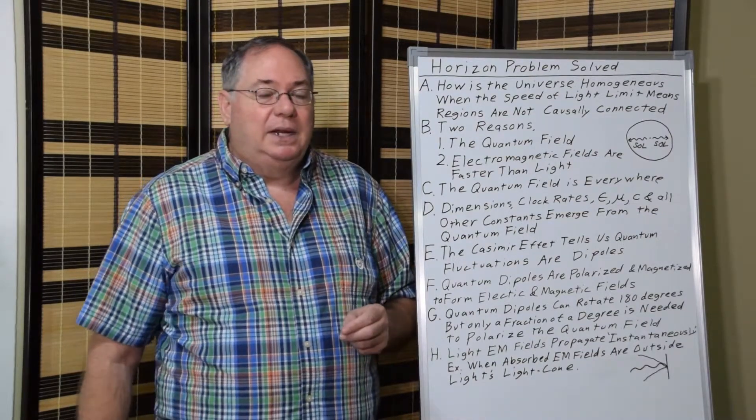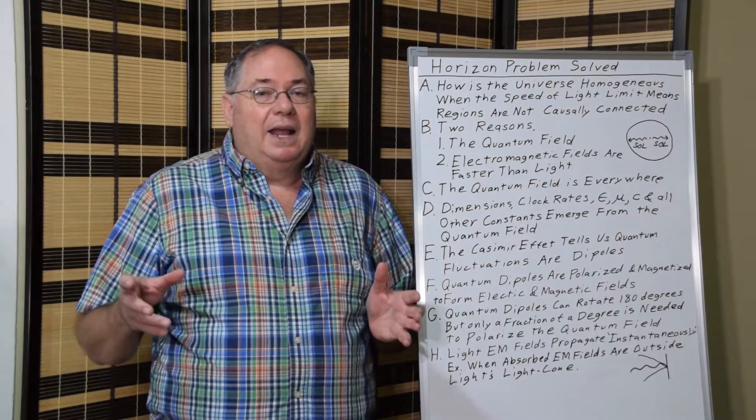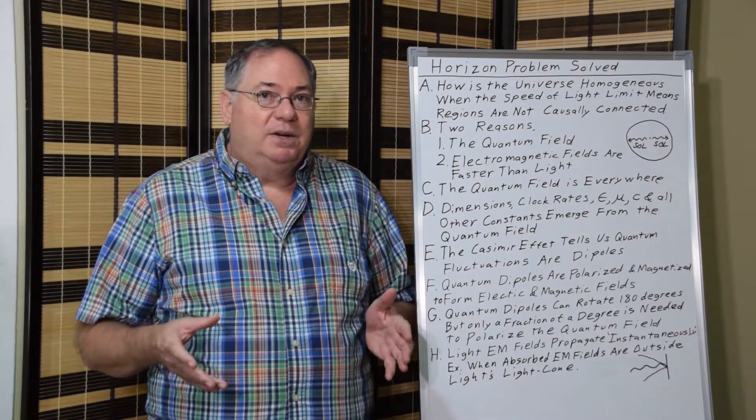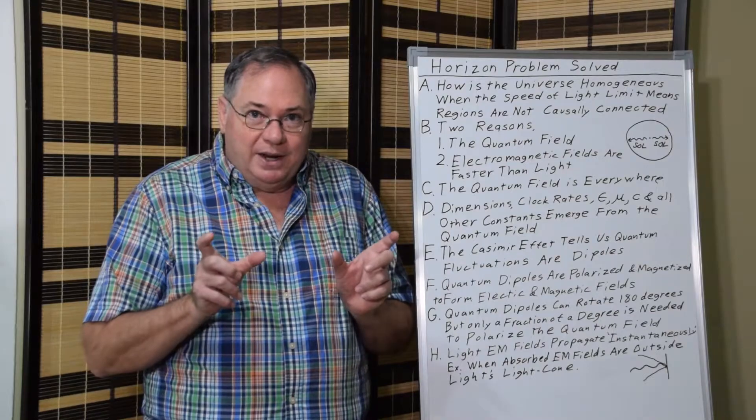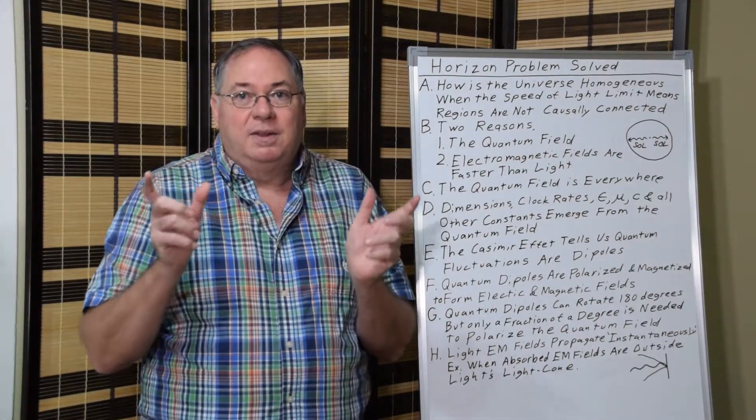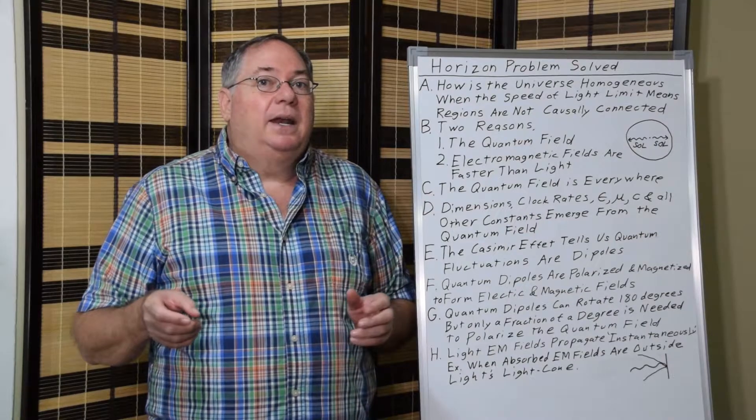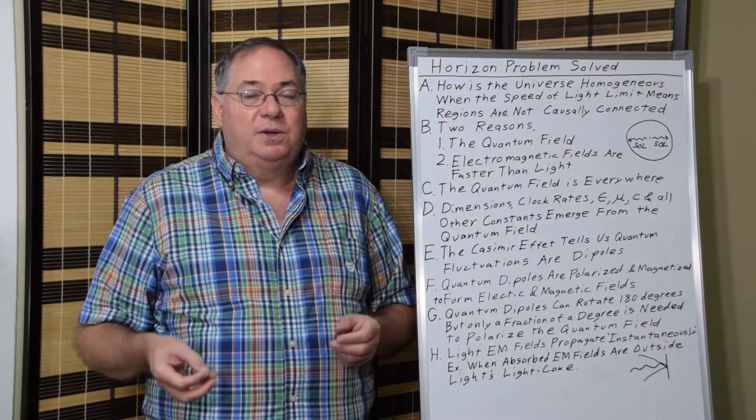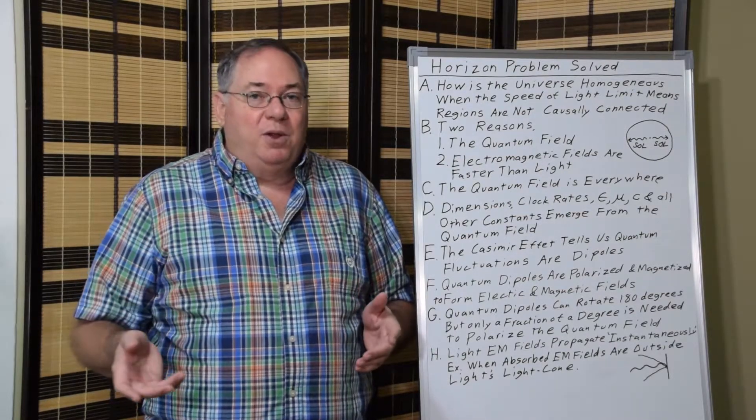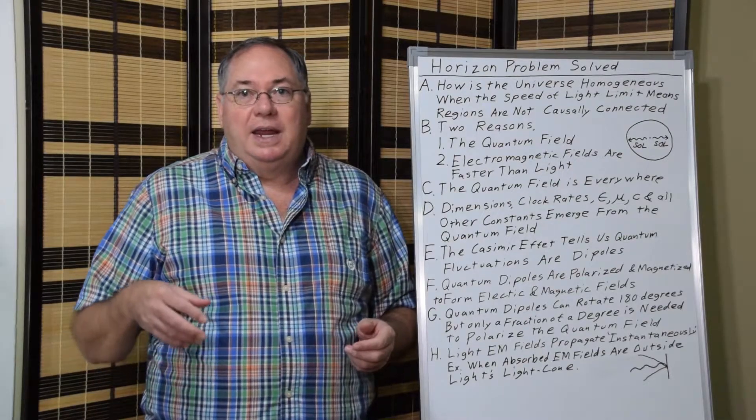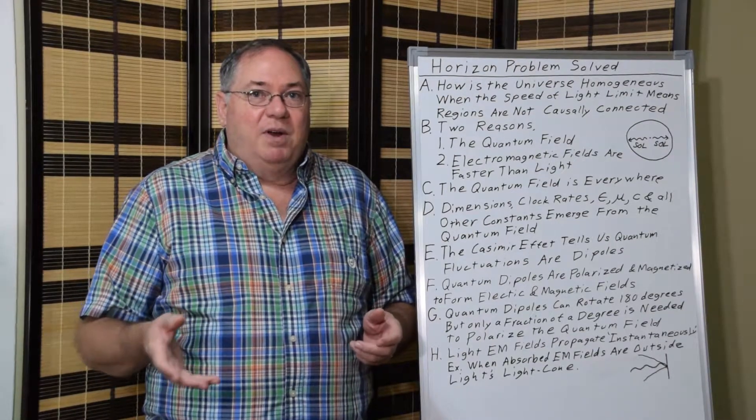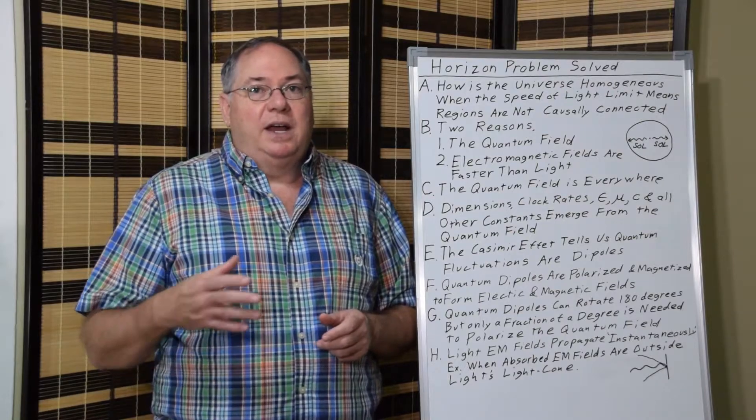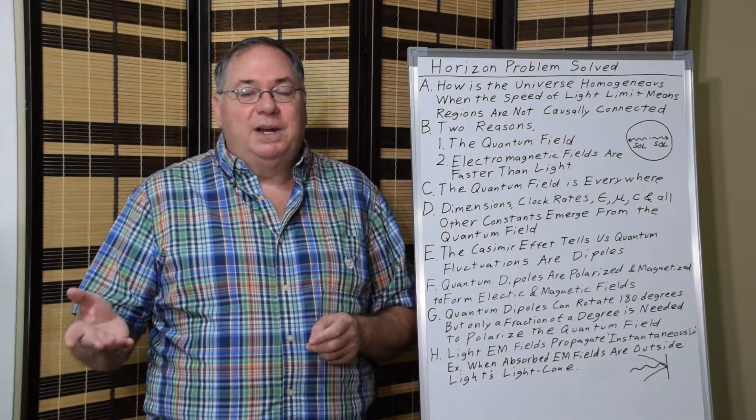And the quantum field also has electric and magnetic constants, permittivity and permeability. And we know that in part because of the Casimir effect. The Casimir effect is due to van der Waals forces between electric charge dipoles that, when they move together, they interact. And because of that, we know the quantum field is electric charge dipoles. So electric charge dipoles can be polarized and they can be magnetized. So they are directly involved with the emergence of the electric and magnetic constant.